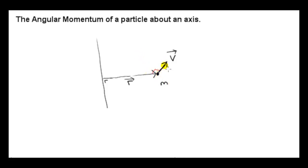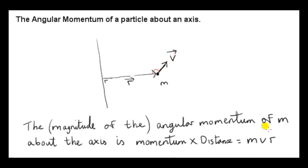Imagine particle m moving into the screen with velocity vector v. Here's the definition of the angular momentum — actually, the magnitude of the angular momentum, because angular momentum is actually a vector. We will not discuss the vector nature; we will just consider the magnitude. We take the momentum of the mass m, which is its mass times its speed — that's v without the arrow — so mv is the magnitude of the particle's momentum at this instant. And we multiply by the perpendicular distance of the particle to the axis.